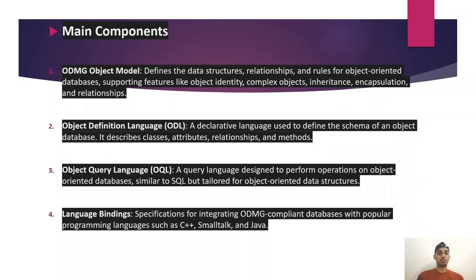Main components: First, the ODMG Object Model — defines the data structures, relationships, and roles for object-oriented databases, supporting features like object identity, complex objects, inheritance, encapsulation, and relationships.